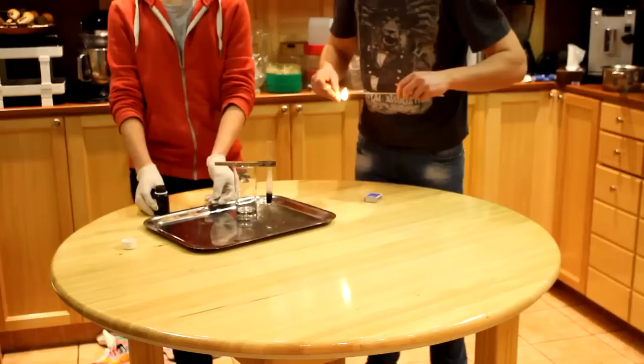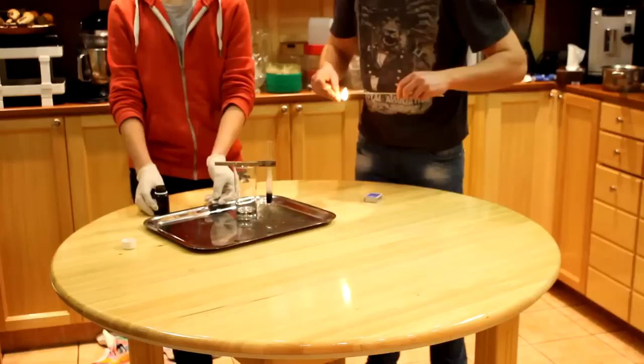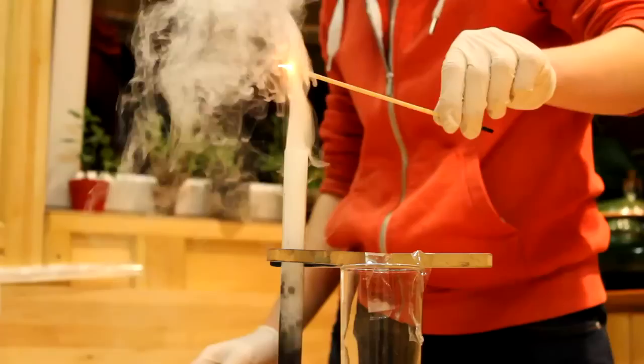A második kísérlet során a hidrogénperoxid oldatot tartalmazó kémcsőbe mangándioxidot, másnéven barna követ szórtunk. A mangándioxid hatására a hidrogénperoxid vízzé és oxigénné bomlik.